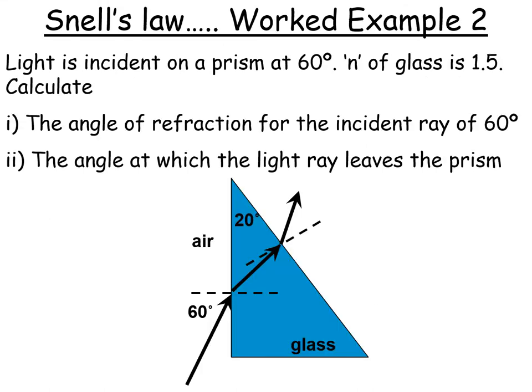Now we can, of course, make these questions a bit more trickier by getting you to use some of your trigonometry rules or geometry rules. So let's look at the second example. Light is incident on a prism at 60 degrees. So you can see this is our incident angle here. And we're told the refractive index of the glass is 1.5. Number one, calculate the angle of refraction for the incident ray of 60 degrees. And number two, the angle at which the light ray leaves the prism.